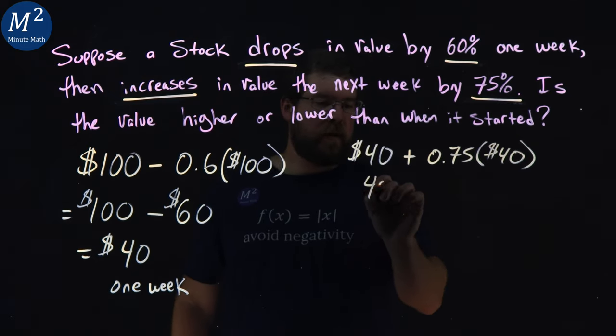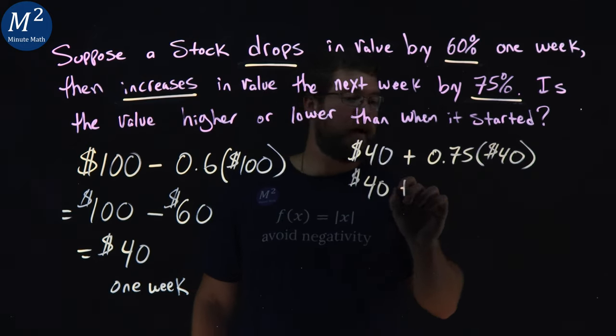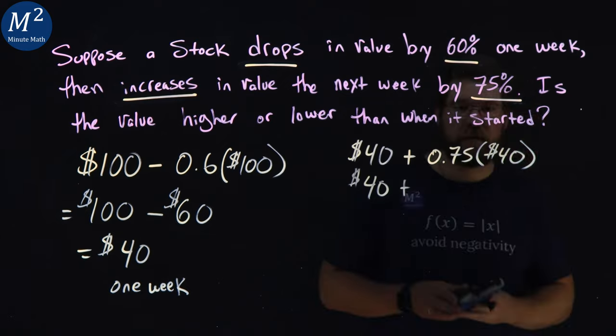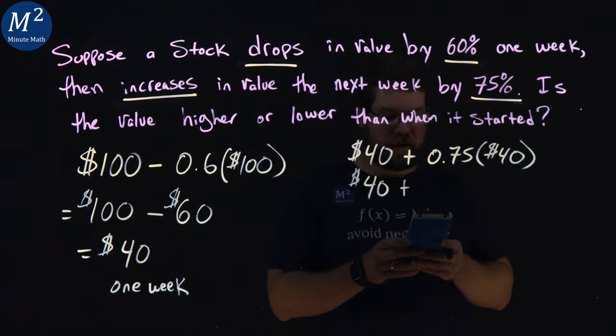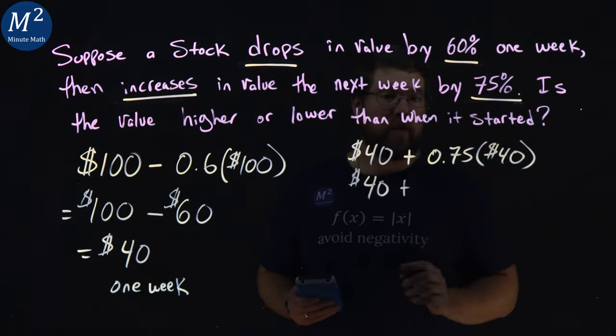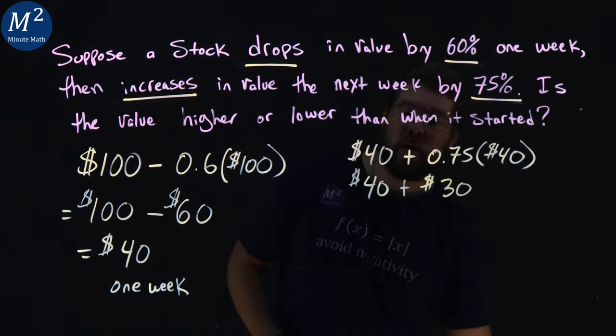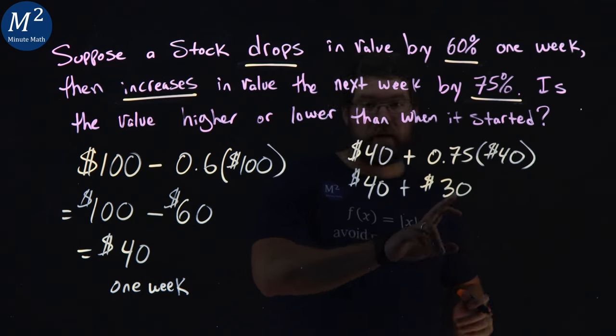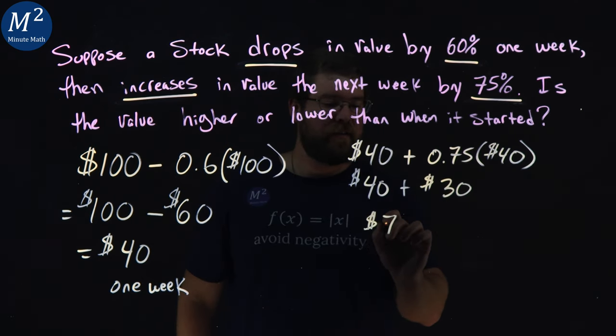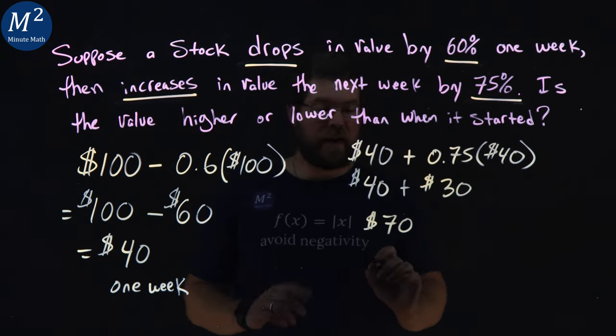From there, let's keep the $40 here, plus, and 0.75 times 40, 0.75 times 40, is $30. Right there. So now 40 plus 30, add it together, is $70, and that's after two weeks.